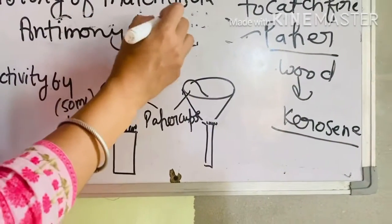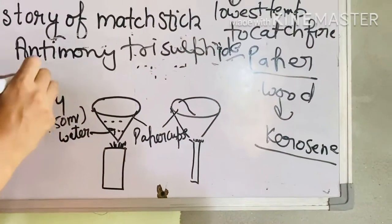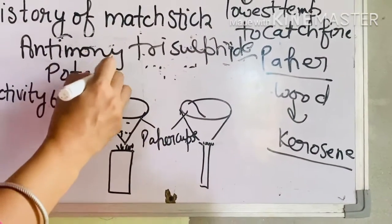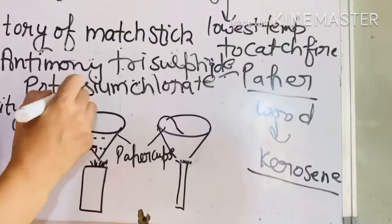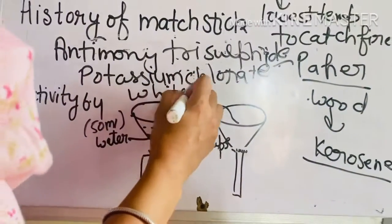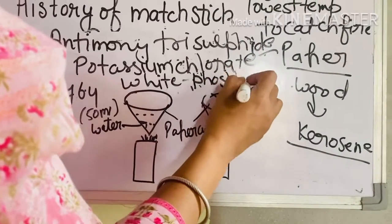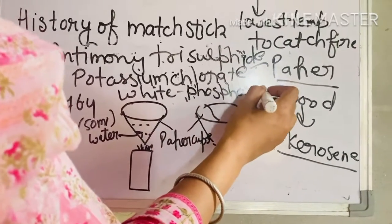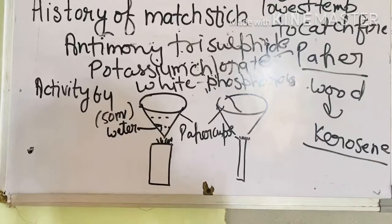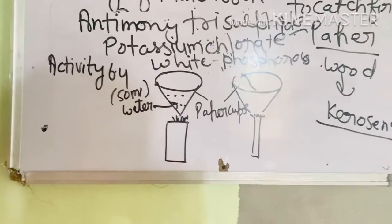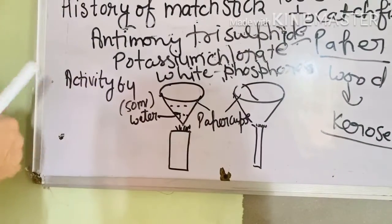The matchstick head contains antimony trisulfide and potassium chloride, along with white phosphorus. However, white phosphorus is poisonous.